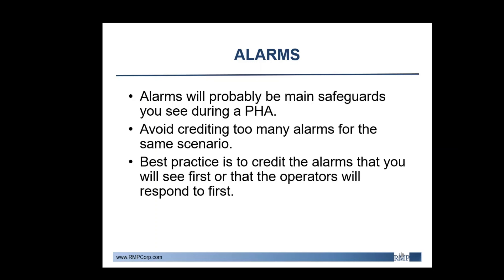Alarms will probably be the main safeguards you see during the PHA, whether it be a low flow or low level alarm. These are commonly used in every industry. You want to avoid creating too many alarms for the same scenario — there's no real reason to have 10 alarms credited for the same scenario. Best practice is to credit the alarms that your operators will be able to respond to first. It is also important to only credit alarms that your operators will have enough time to respond to — best practice is 20 minutes or more for field operators, and 10 or more minutes for board operators.